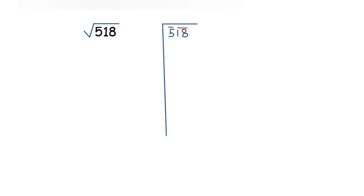The second step is to find a perfect square nearest to 5. The nearest perfect square is 4, and 2 × 2 = 4, so our divisor is 2. Write 2 in the quotient. 2 × 2 = 4; subtract to get a remainder of 1. Now drop the pair '18' to get the new dividend 118.